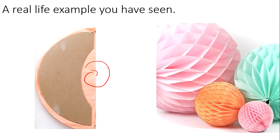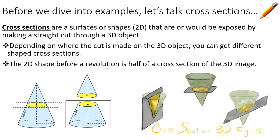The cross section of a sphere, if we cut it in any way, is a circle—but the 2D shape we need before revolving is half of that cross section, which is the semicircle. For cones: a horizontal cut gives a circular cross section, a vertical cut gives a triangle, and a slanted cut gives an ellipse, because the radii are unequal. So depending on how you cut a 3D shape, your 2D cross section can be different.